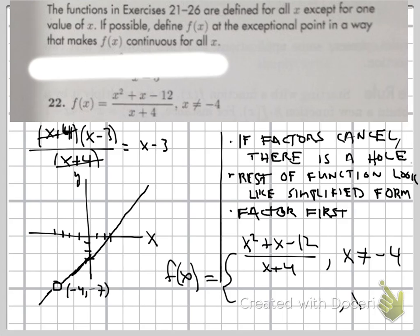But at the point where x is equal to negative 4, we just want to give it a set value. It's only that one point, and so we can give it the value of negative 7.